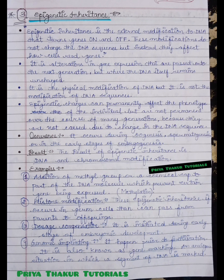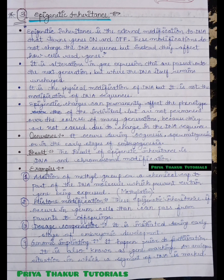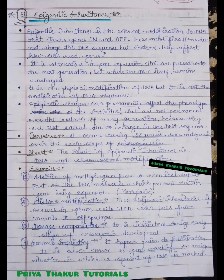According to the occurrence of epigenetic inheritance, it occurs during oogenesis, spermatogenesis, and in the early stages of embryogenesis. Overall, we can say that epigenetic inheritance takes place during gametogenesis and in the early stages of embryogenesis.